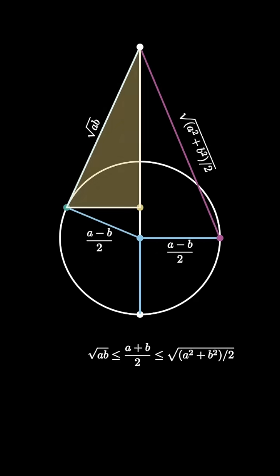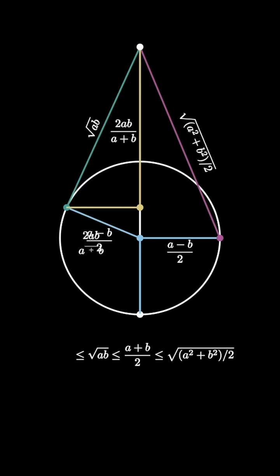This yellow shaded triangle is similar to this larger green shaded triangle, and by similarity that means this side length is 2ab/(a+b), and that side length 2ab/(a+b) is less than or equal to the hypotenuse sqrt(ab).